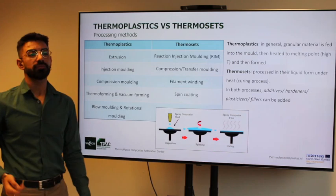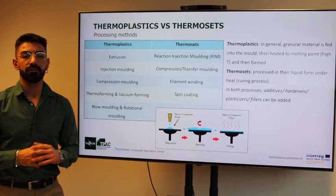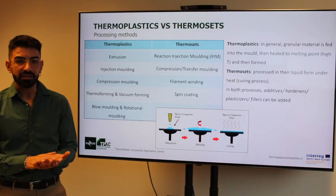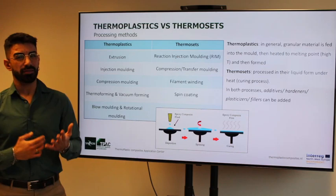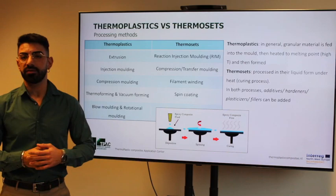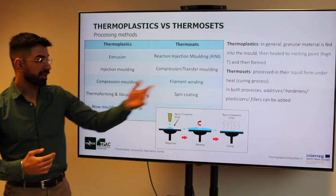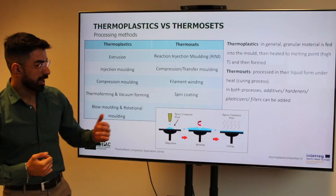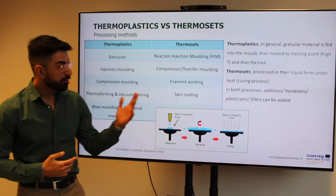Following on processing methods, for thermoplastics, granular material is fed into the mold where it is heated to the melting temperature — which is quite high — and then shaped and formed. Thermosets are processed in liquid form under heat, at a slow curing time. In both processes, you can add other materials such as additives, hardeners, plasticizers, or fillers, depending on the final application — for example, to increase impact resistance, lower viscosity, or reinforce the material.